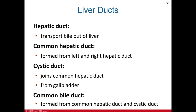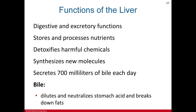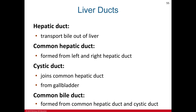The liver has several ducts: the hepatic duct transports bile out of the liver; the common hepatic duct forms from the left and right hepatic ducts; the cystic duct connects the gallbladder to the common hepatic duct; and the common bile duct, formed from the common hepatic duct and cystic duct, empties into the duodenum. Bile is a fluid made and released by the liver, stored in the gallbladder, that helps break down fats into fatty acids for absorption by the digestive tract.